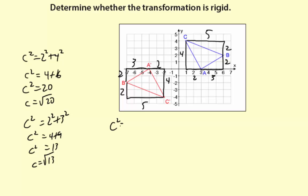So let's say it's C squared equals two squared plus five squared. C squared equals four plus 25. C squared equals 29. C equals square root of 29. So that means the distance of the segment BC and B prime C prime is square root of 29.